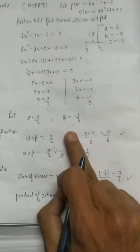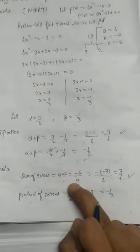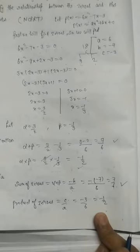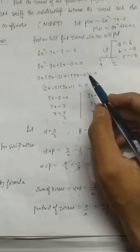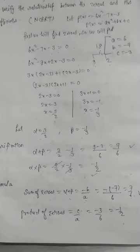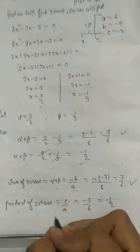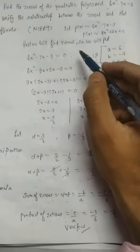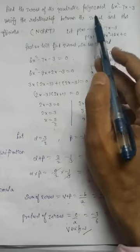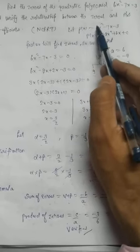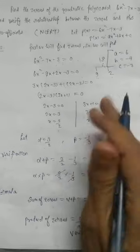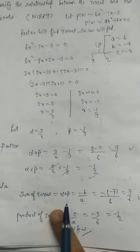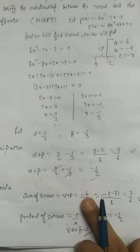We can say the sum of zeros calculated directly and from the formula are both 7/6 — verified. The product of zeros from both methods is −1/2 — verified. We have verified the relationship between the zeros and the coefficients of the polynomial. The steps are: find the zeros, assume them as alpha and beta, calculate sum and product directly, then apply the formula and confirm both match.